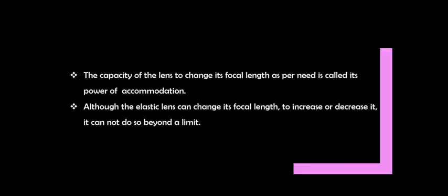The capacity of the lens to change its focal length as per the need is called its power of accommodation. Although the elastic lens can change its focal length, it cannot do so beyond a limit. That is why you cannot see very nearby or very distant objects, because at a point its limit will be reached.